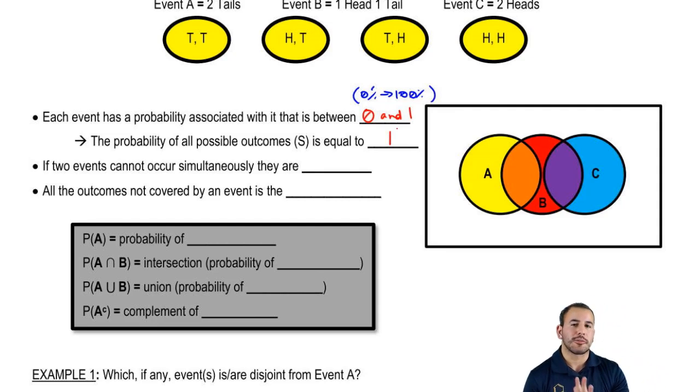So now, if two events cannot occur simultaneously, they are considered disjoint. Now, another way some books may go ahead and describe this is mutually exclusive. Right? So if two events are mutually exclusive, they basically can't ever happen at the same time. So one easy example, and I'm talking about in general, not any particular odd cases, but if you're about to give birth, right, there's two possibilities. You're either going to have a boy or a girl. Can you have a boy and a girl?